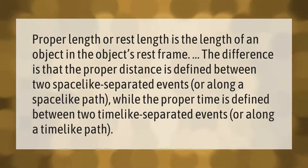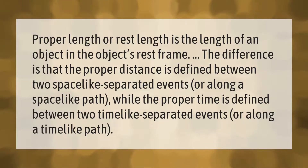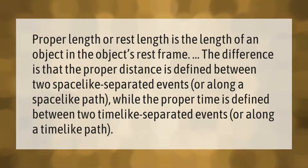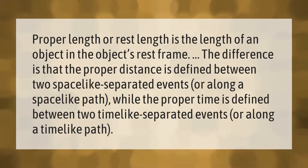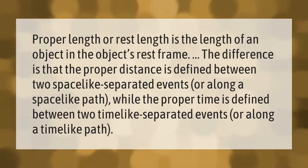Proper length, or rest length, is the length of an object in the object's rest frame. The proper distance is defined between two space-like separated events or along a space-like path, while proper time is defined between two time-like separated events or along a time-like path.